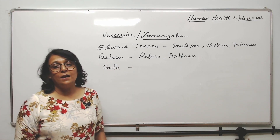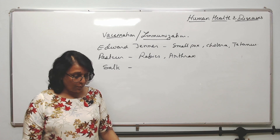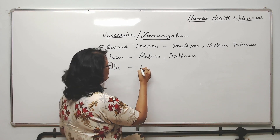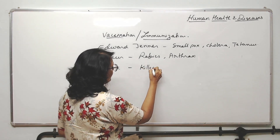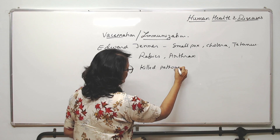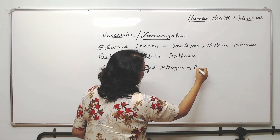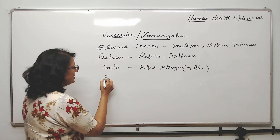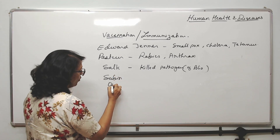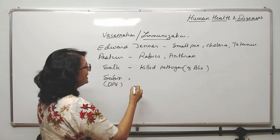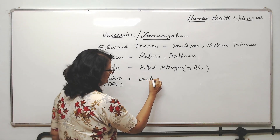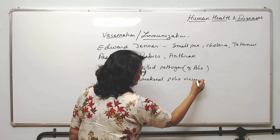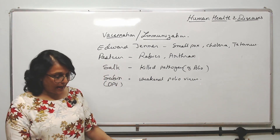Then Salk — this is the name of the scientist and the vaccine was against polio. Salk's vaccine contains killed polio virus. The other one is Sabin, which is given as the oral polio vaccine and it contains the weakened polio virus. So one has the killed pathogen and the other has the weakened one.